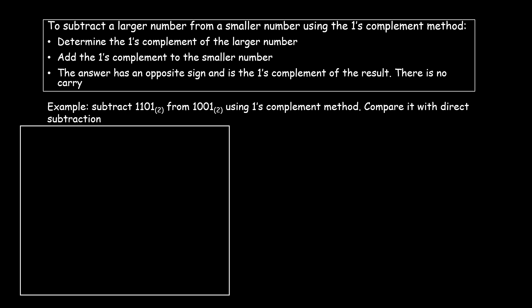Let's discuss this with an example. The question says: subtract 1101 from 1001. So from the number 1001, I need to subtract 1101. The first step is to determine the one's complement of the larger number, which in this case is the second number, 1101.